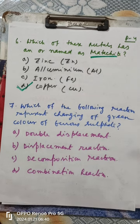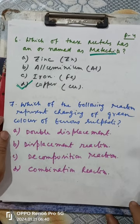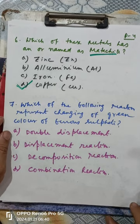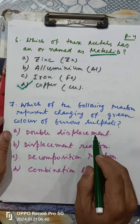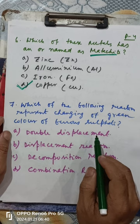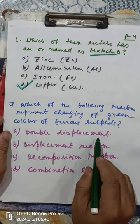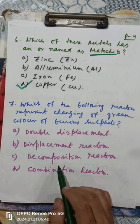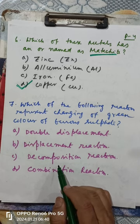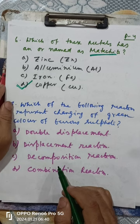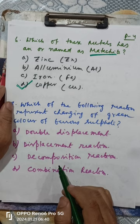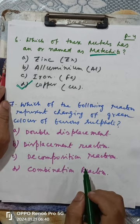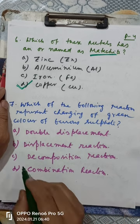This is not a double displacement reaction or a single displacement reaction. Decomposition means one compound breaks down to form two or more new compounds — by changing color, formation of oxygen, or formation of gases. Since ferrous sulfate decomposes and changes color, the answer for question seven is decomposition reaction.